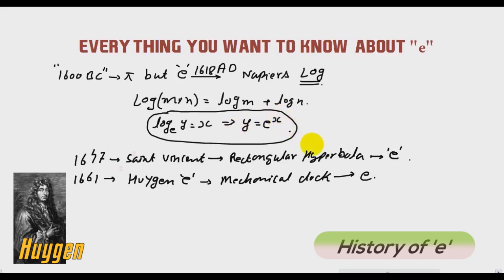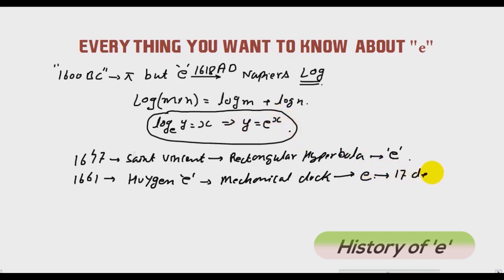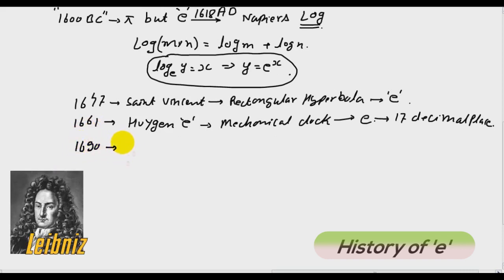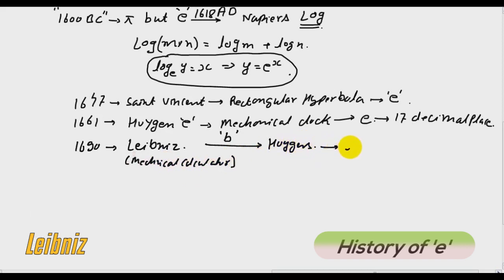The first written use of e can be seen in 1690 when Leibniz, who invented the first mechanical calculator, wrote a letter to Huygens where he discussed e, but he used b instead of e. But after 1690, when the invention of mechanical calculator came, mathematicians understood the power of this equation.